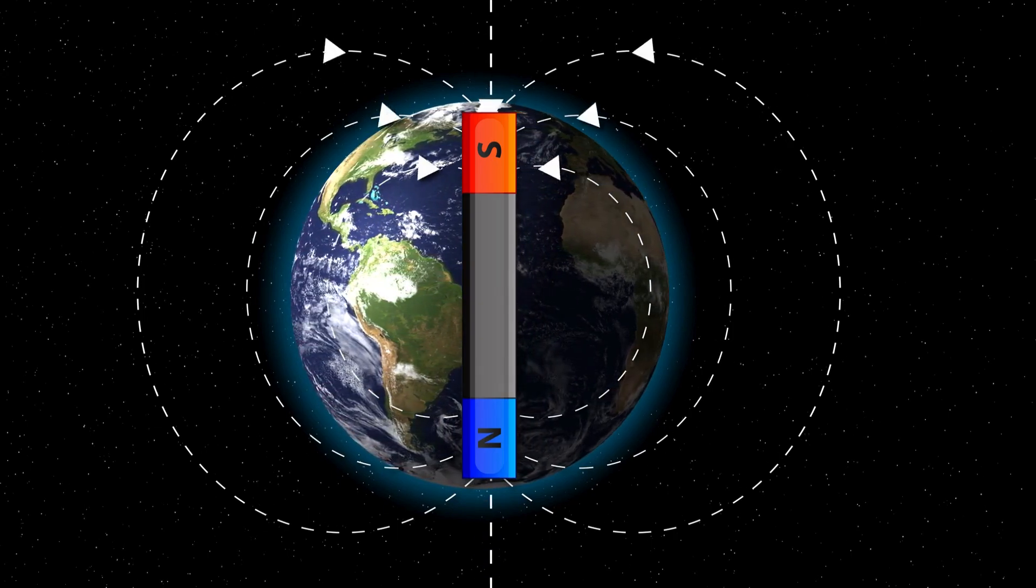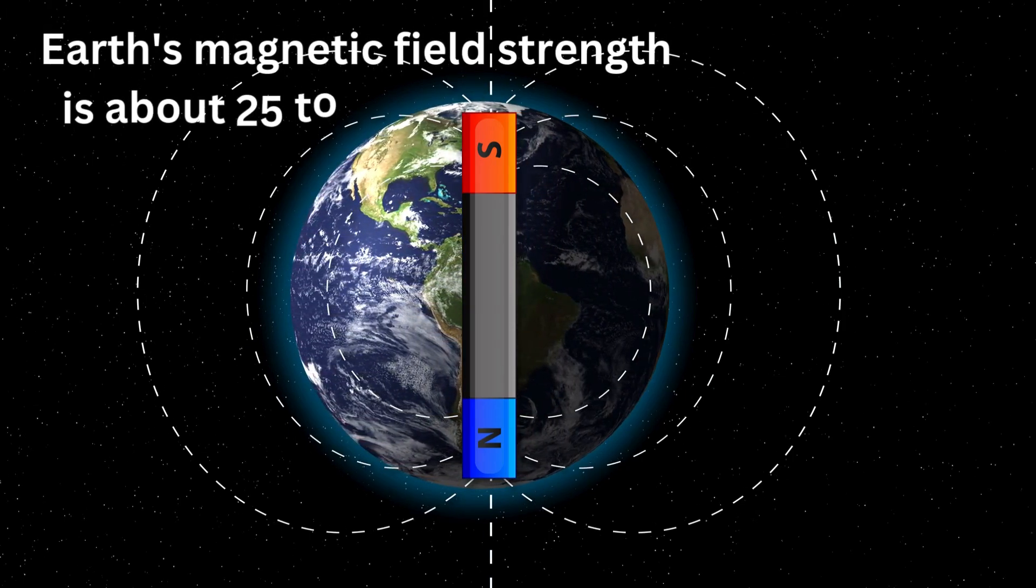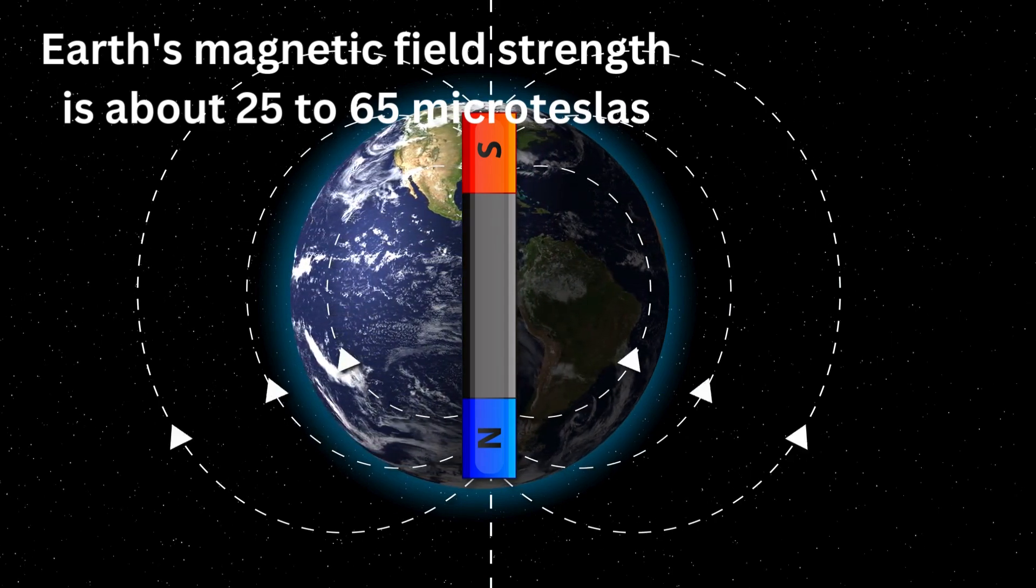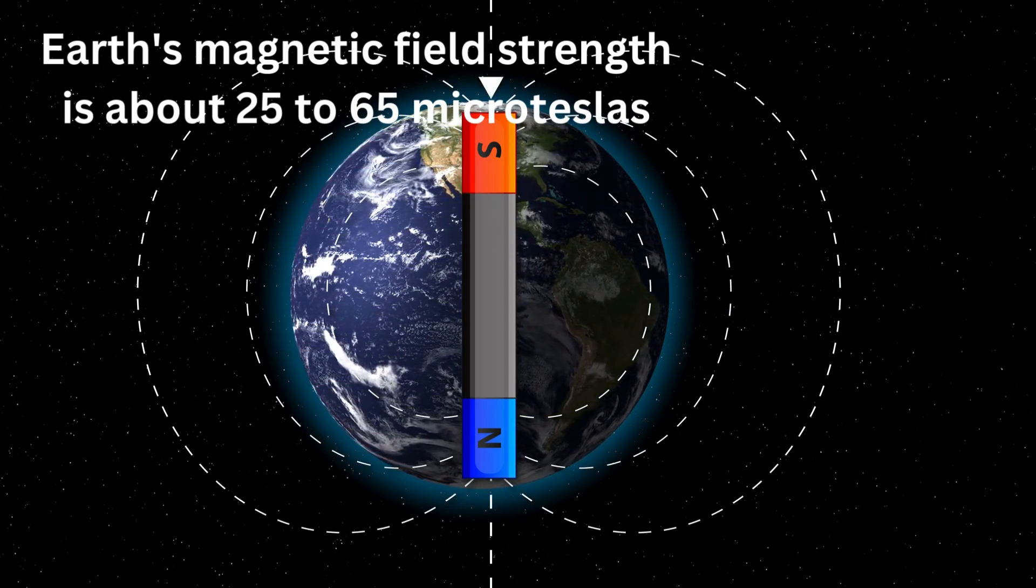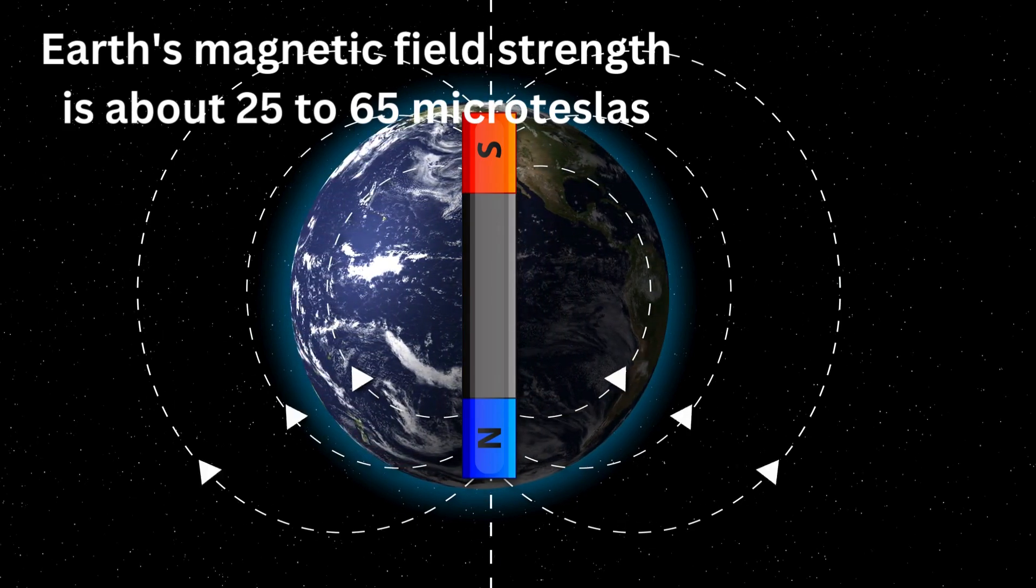Now, let's talk about the strength of Earth's magnetic field. On average, the magnetic field strength is about 25 to 65 microteslas, depending on where you are on the planet. That's roughly 1,000 times weaker than a typical refrigerator magnet.